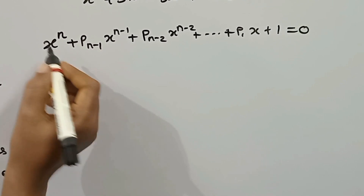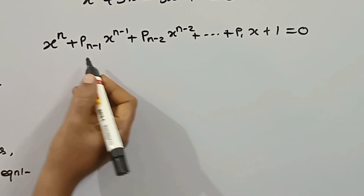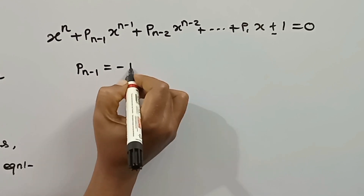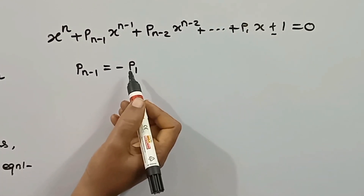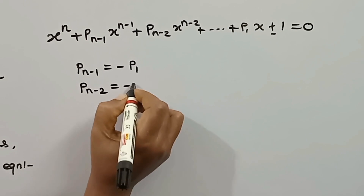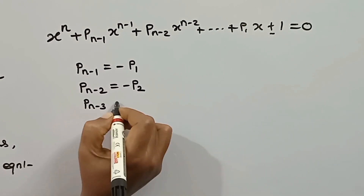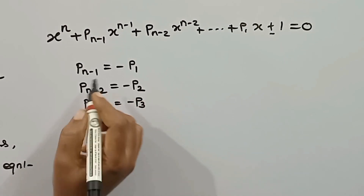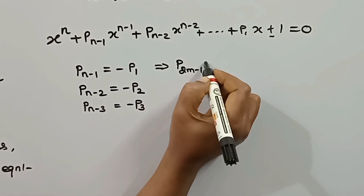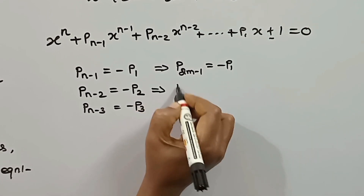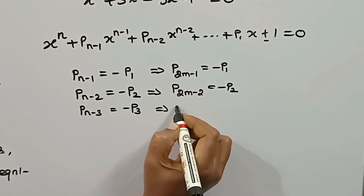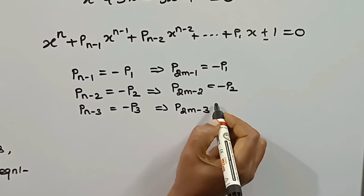We replace n with 2m for even degree. If the even degree is unlike sign, the coefficients satisfy: p_{2m-1} equals minus p_1, p_{2m-2} equals minus p_2, and p_{2m-3} equals minus p_3. These are the conditions for even degree unlike sign reciprocal equation.